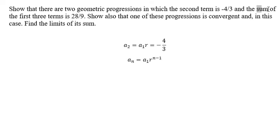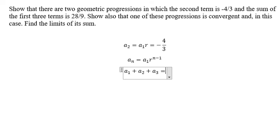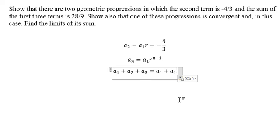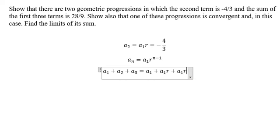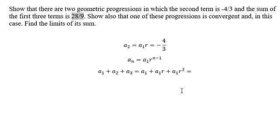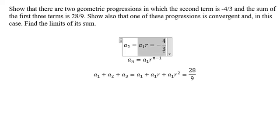For the sum of the first three terms, we have a1, a2, and a3. Applying the formula: a1 is a1, a2 is a1·r, and a3 is a1·r squared. We know the sum of the three terms equals 28 over 9. Now we have two equations.